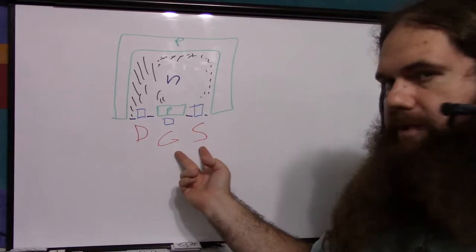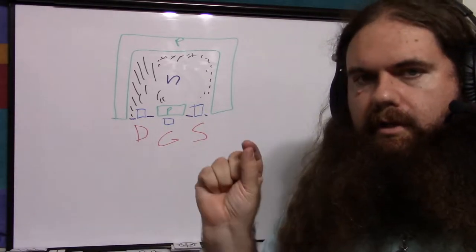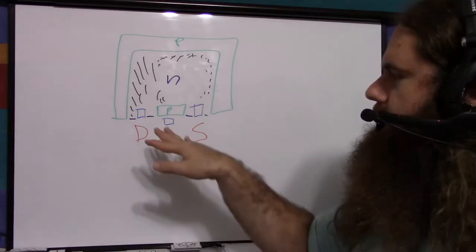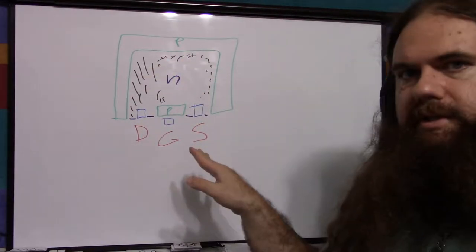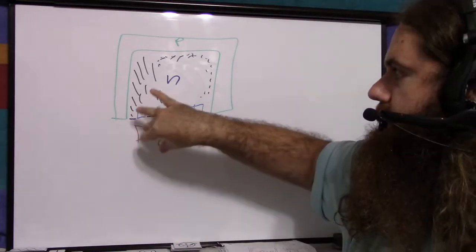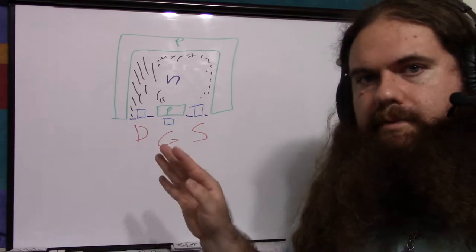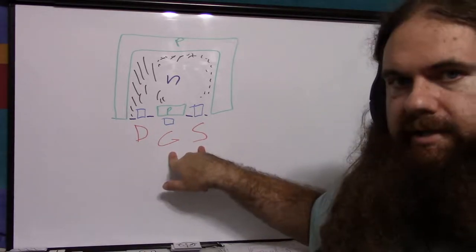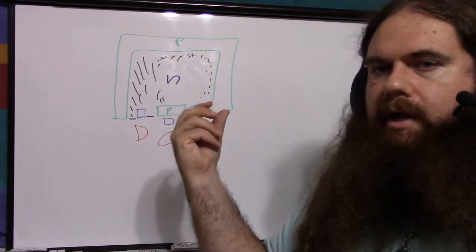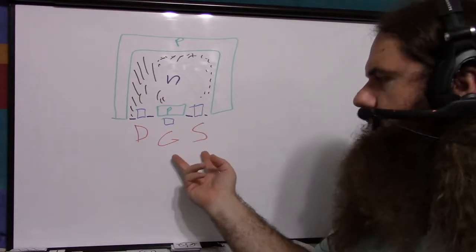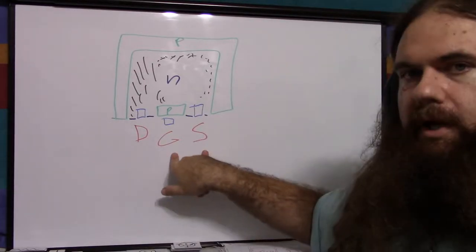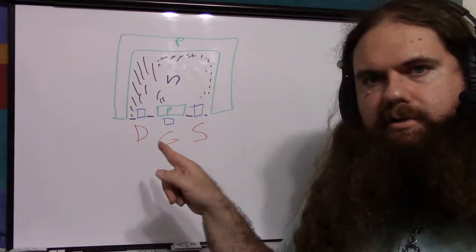If the gate-to-source voltage is low or zero — let's say no voltage is applied — then you have just the natural depletion layer that forms, sort of like the forward voltage drop of a diode. If you reverse bias this junction, the depletion layer gets bigger and bigger, and it chokes off the current until something called the pinch voltage, where you can't get through anymore. If you apply enough voltage, the transistor turns off.